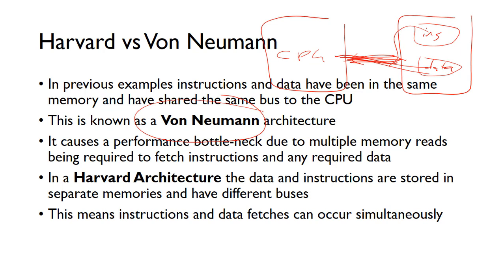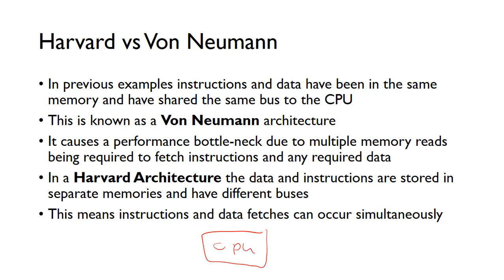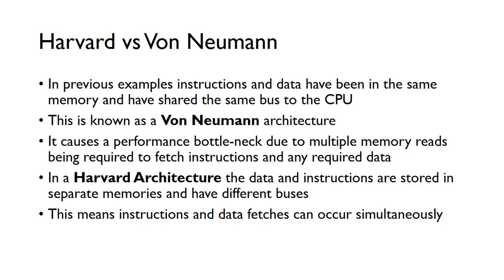There's another architecture called a Harvard architecture. This is where instructions and data are stored in different, physically separate memories with separate buses too. In a Harvard architecture, the CPU is connected by one bus to a memory containing instructions, and another bus to a memory containing data. This means instructions and data fetches can occur simultaneously — while we're fetching data, we can be fetching instructions at the same time — leading to a performance increase compared to von Neumann.